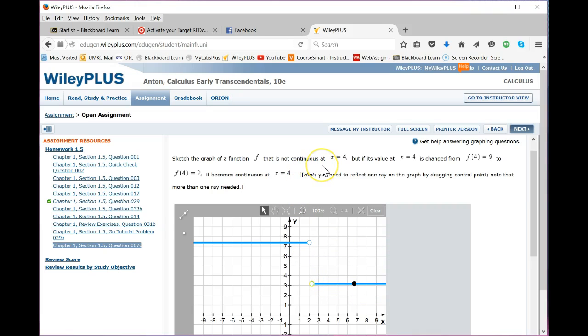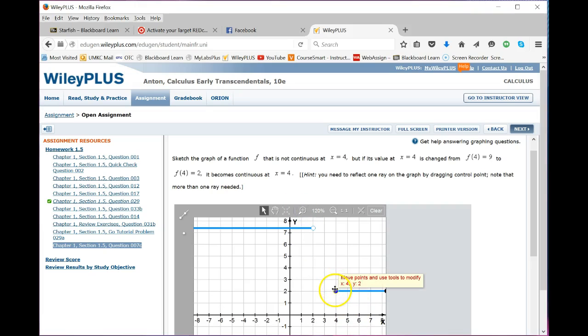So if the function was continuous, the value at 4 would be 2. So over here f at 4 is 2, kind of moving this around. Sometimes it helps if you zoom in a little bit. 4, 2 - I'm going to bring this one down and put it on 4, 2.